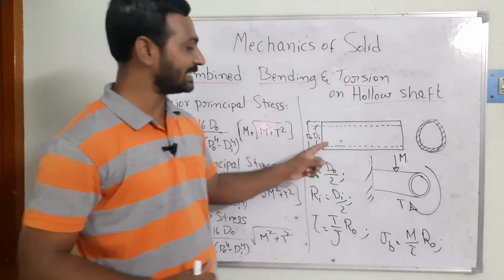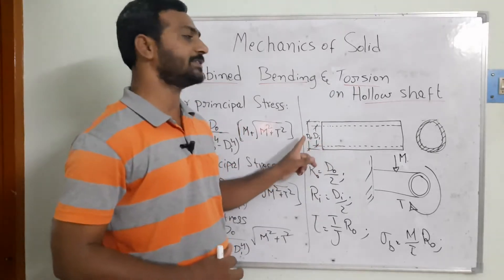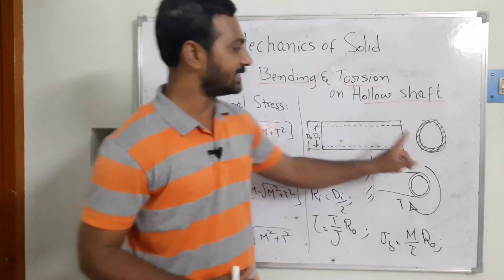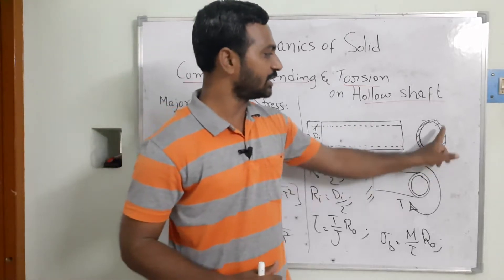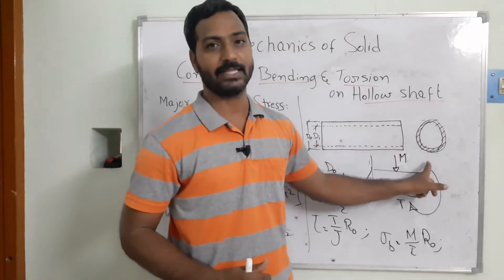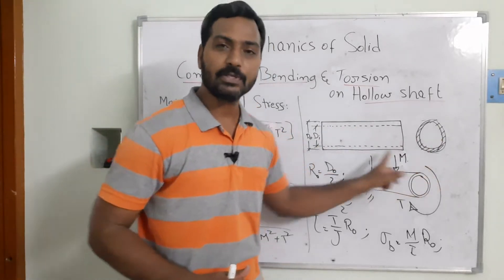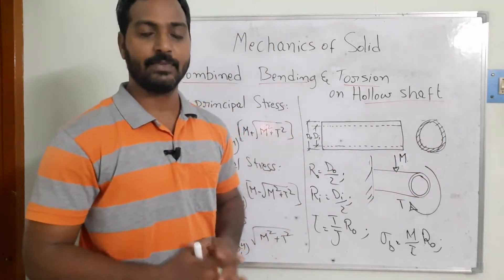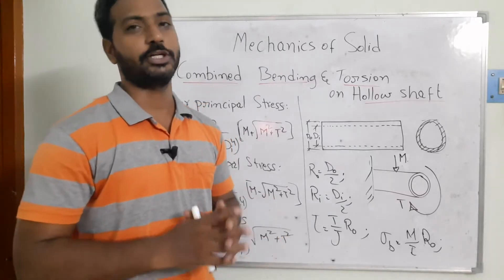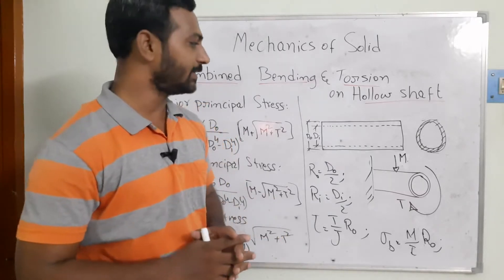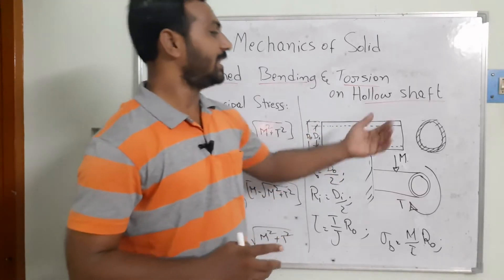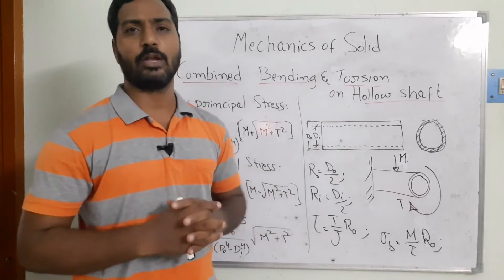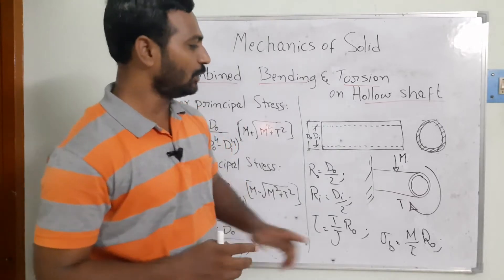As we know, the hollow shaft has an inner diameter as well as an outer diameter, and the end cross-section is visible like this. The purpose of designing a hollow shaft is to reduce the weight compared to a solid shaft.